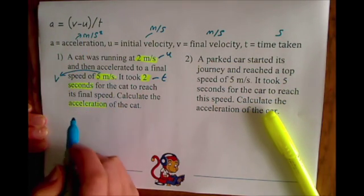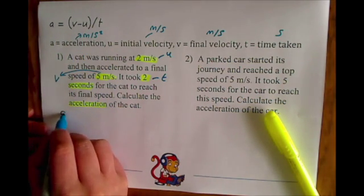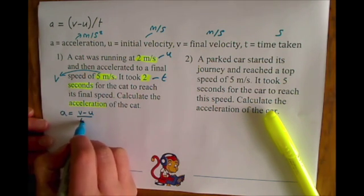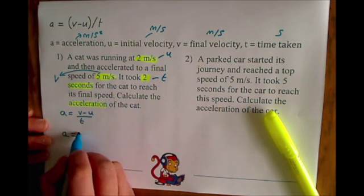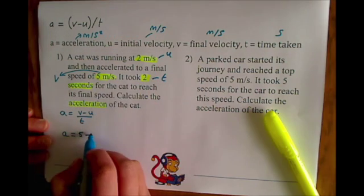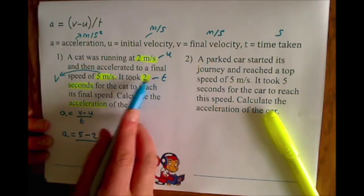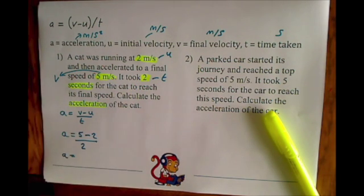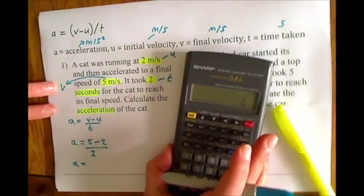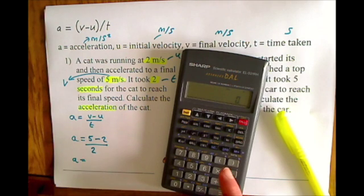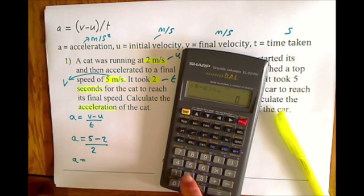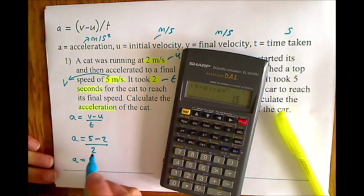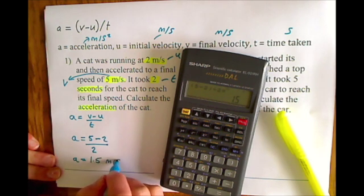Write the equation out in full after you find it on the equation sheet: a equals v minus u divided by t, then just put the numbers in. So it's 5 minus 2, divided by 2. Where people go wrong is how they put it into the calculator — use brackets so the calculator does 5 minus 2 first, then divides by 2, to get the answer of 1.5 meters per second squared.